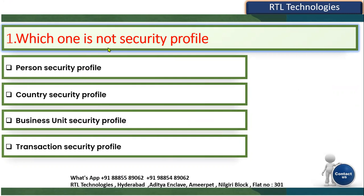We have a total of ten types of security profiles. Which one is not a security profile? We have person security profile, which is used to restrict person's data. We have country security profile to restrict country-level security. We don't have any security profile related to business unit — we have organization security profile, but the name 'business unit security profile' is not there.